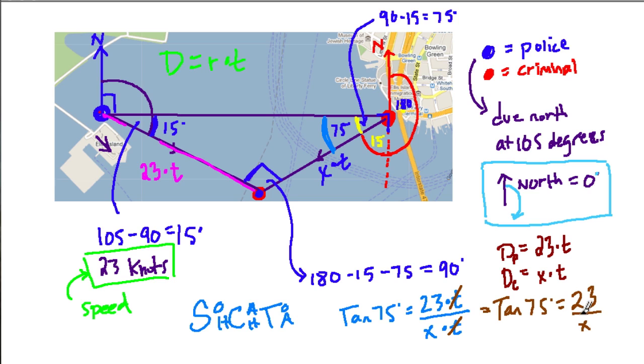So how do we figure out x? We can multiply both sides by x. These x's cancel out. And x times tan of 75, so we have x times the tangent of 75 equals 23. And then, divide both sides by the tangent of 75. So x equals 23 over the tangent of 75. And that will tell us what was the rate of the criminal boat to get to this point?